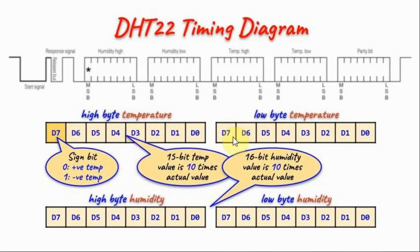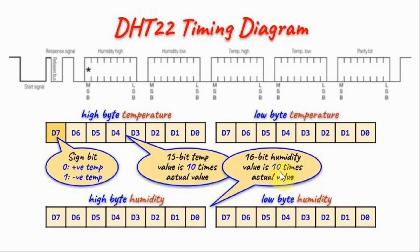The temperature read from the sensor is a 16-bit value where the most significant bit of the high byte is the sign bit. Zero means positive temperature, one means negative temperature. The remaining 15 bits represent the value, which is 10 times the actual value. Similarly, the 16-bit humidity value is also 10 times the actual value.